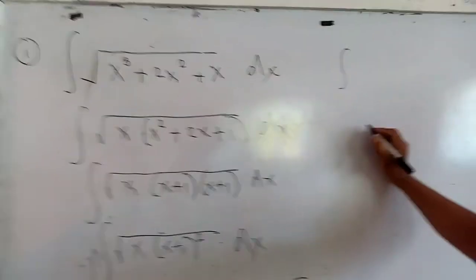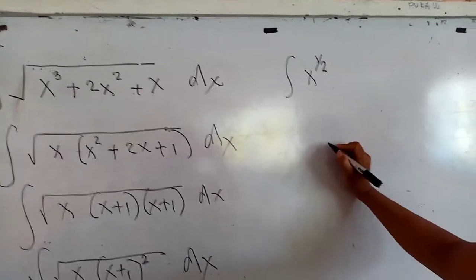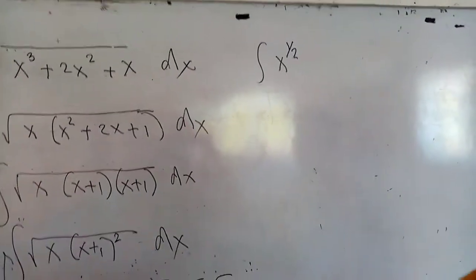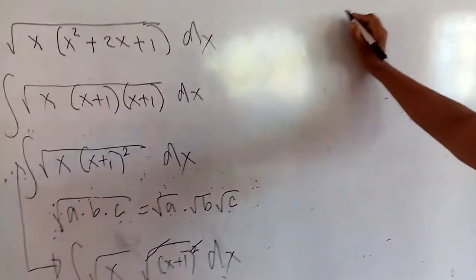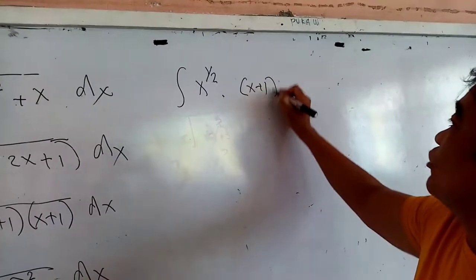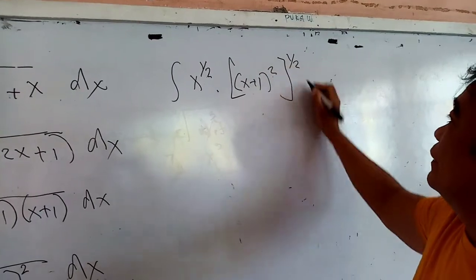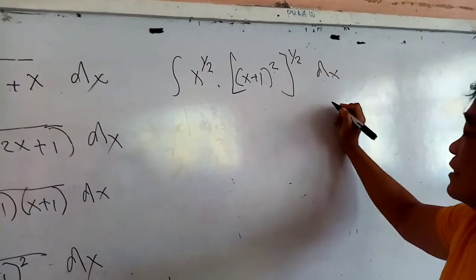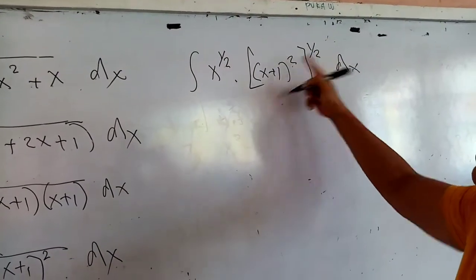That will be x raised to the positive one-half. Remember that the radical side will cancel from your square — because if you transform to exponential, that would be (x plus 1) squared, bracket raised to one-half — then multiplied by dx. You multiply one-half times 2, and that will cancel.